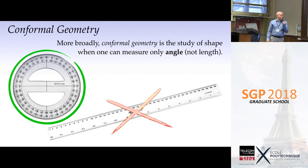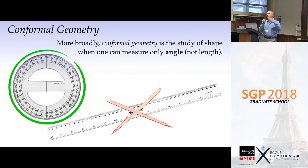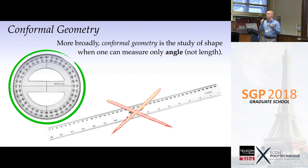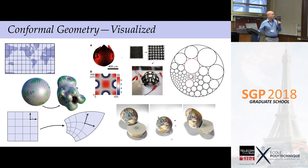Beyond making maps of the earth, conformal geometry at an abstract level is the study of shape when you can only make measurements of angle. You have some shape, you can't take out your ruler, but you can take out your protractor and make angle measurements. The question is: if I can only make those measurements, what can I say about that shape? These are the kinds of pictures that show up in conformal geometry to give visual intuition about angle-preserving maps.